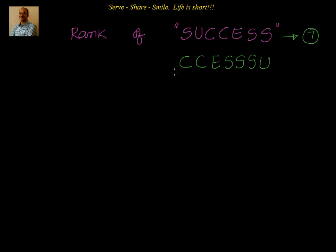Our approach is: first write the letters in alphabetical order, then see how many words can be formed starting with a particular letter, and that's how we'll find the rank of SUCCESS. The first words in alphabetical order start with C and E, but SUCCESS starts with S, so we're not interested in words starting with C and E — we just need to count them.